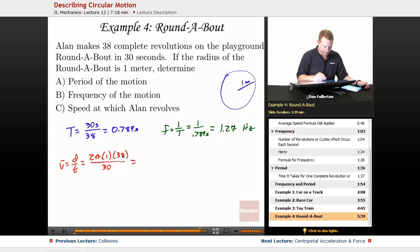So 2 pi times 1 times 38 divided by 30, I get a speed of about 7.96 meters per second.